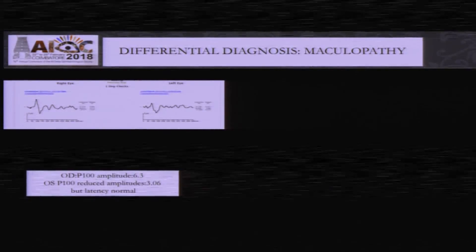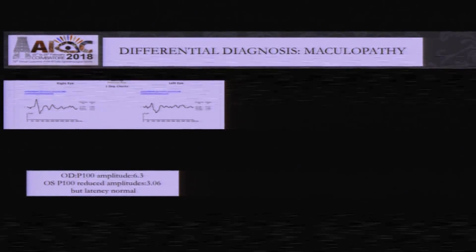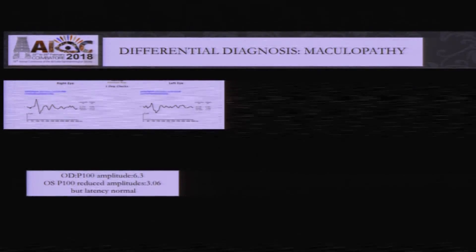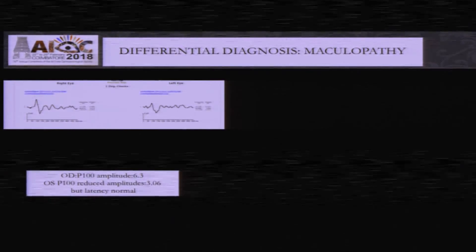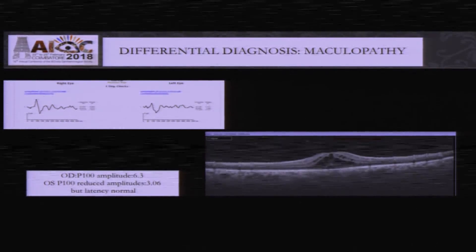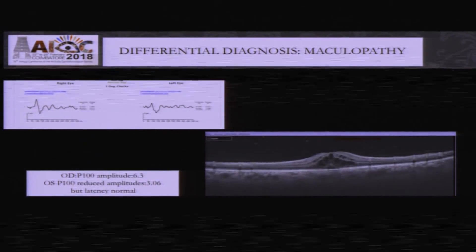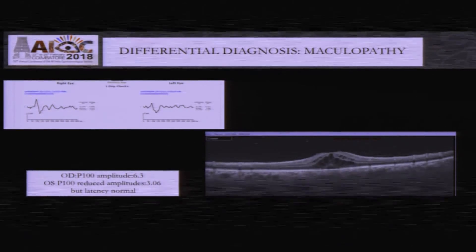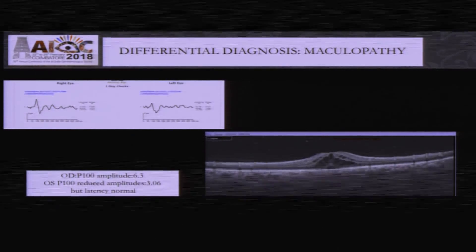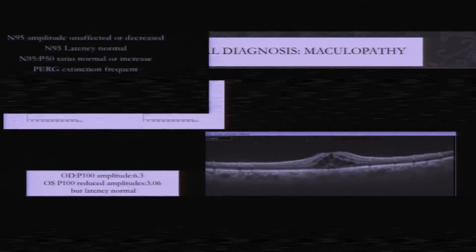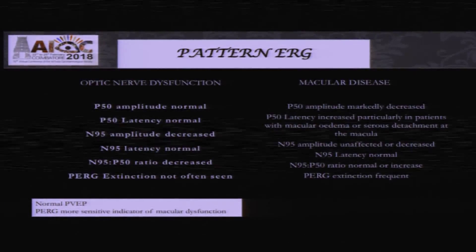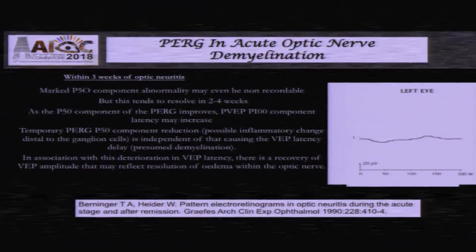The negative deflection below the baseline in pattern ERG corresponds to optic nerve function. Pattern ERG helps differentiate between maculopathy and optic nerve dysfunction — if there is macular dysfunction, P50 will be selectively affected. This example actually shows a pattern VEP: it is reduced in the left eye compared to the right, which may suggest optic nerve dysfunction, but it was actually a simple case of macular edema. This is because most fibers in the optic nerve are predominantly coming from the macula, so any macular disorder can also affect the pattern VEP.